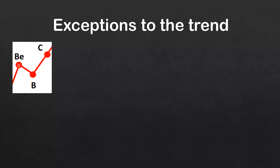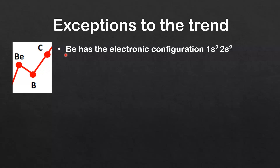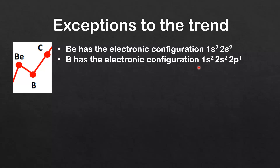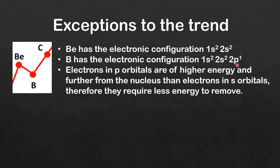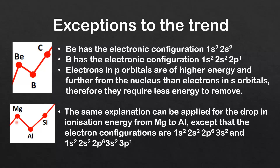There is a decrease in ionization energy between beryllium and boron. Beryllium has the electronic configuration 1s² 2s². Boron has the configuration 1s² 2s² 2p¹. The electron in boron's 2p orbital requires less energy to remove than the electron in the 2s orbital, which explains the decrease in ionization energy.